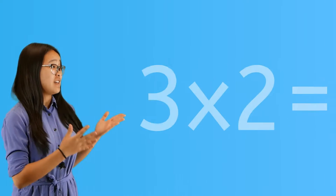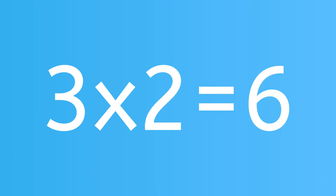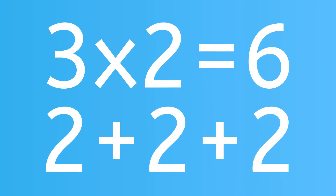First of all, what is multiplication? Multiplication means to add the same number again and again and again. We write multiplication problems like this: 3 times 2 is equal to 6. This means that we're figuring out how many there are if we think of three 2's, or 2 plus 2 plus 2.